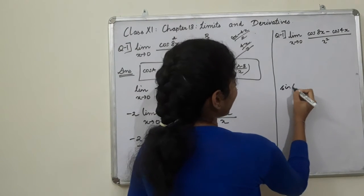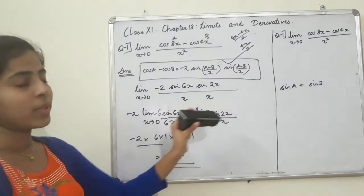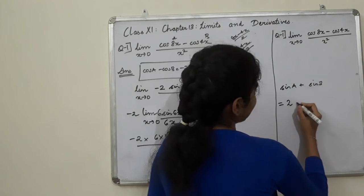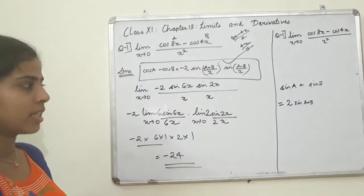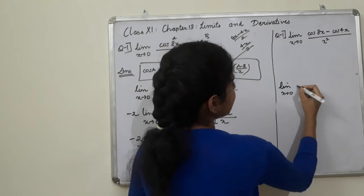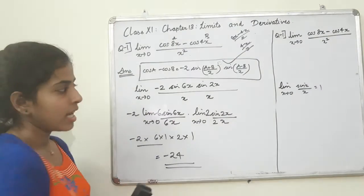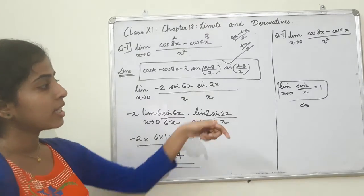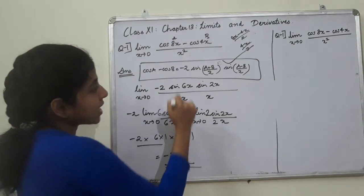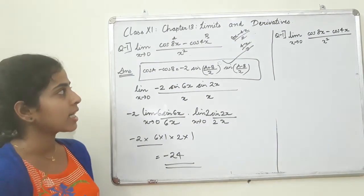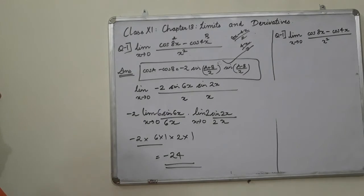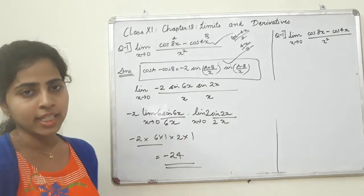Now, we use the standard limit formula: limit as x tends to 0 of sin(x)/x equals 1. So sin(6x)/x equals 6 and sin(2x)/x equals 2, each tending to 1 in standard form. So the answer is negative 2 times 6 times 2 equals negative 24. This is your first question. If you have learned the formula, you can solve it. Thank you.